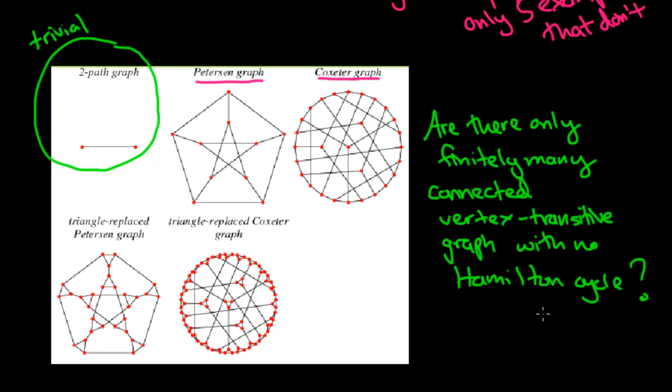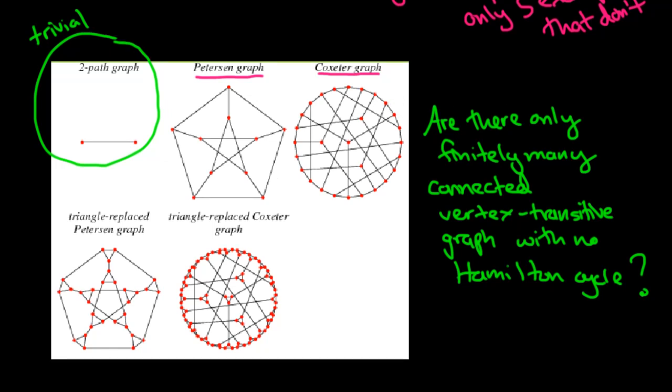So to get you thinking a little bit more about Hamilton cycles, I have a problem for you to try. So first of all, I want you to just look at the Peterson graph. This graph is a little bit more easy to deal with than something like the Coxeter graph, that's pretty clear.